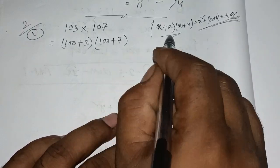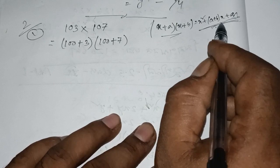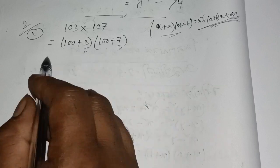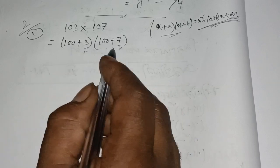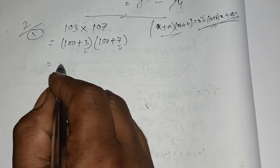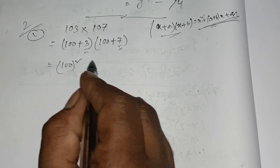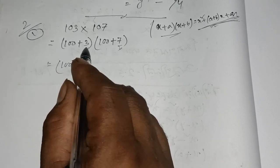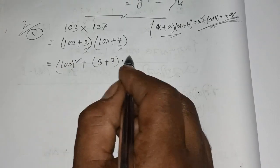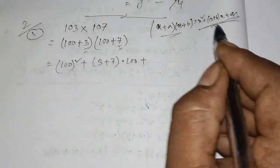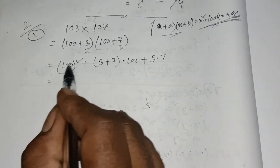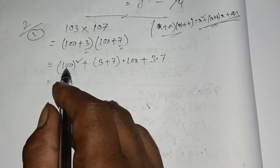Using x plus a into x plus b equals x squared plus a plus b into x plus ab: here a equals 3 and b equals 7. So a plus b equals 3 plus 7 into x, and ab means 3 into 7.